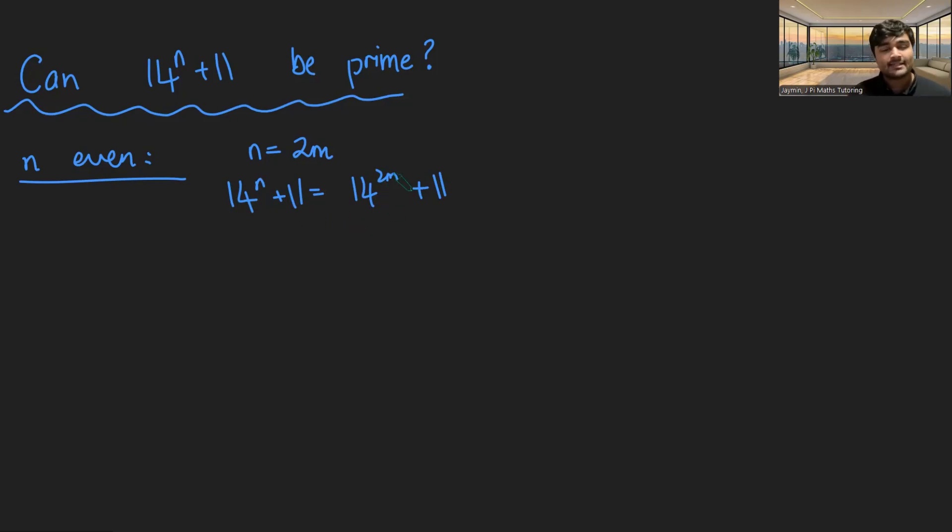Now, you could do this using modular arithmetic, as I say, but we're not going to do that, but we're essentially going to be doing that behind the scenes. I'm going to write this as 15 minus 1 to the 2m plus 11.